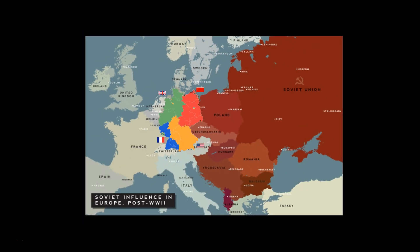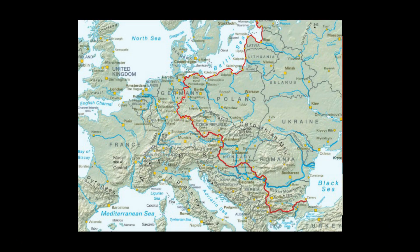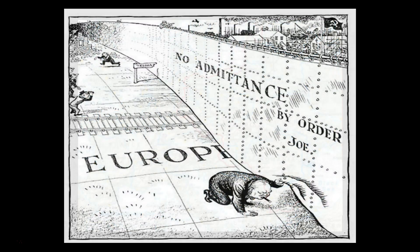By 1947, the outlines of a divided Europe had appeared, with a Soviet-dominated zone and a US-led zone separated by military power — what Winston Churchill called the Iron Curtain. The conflict between the United States and the Soviet Union was intensified by the invention and rapid proliferation of the atomic bomb, which ushered in a new age in which military conflict could potentially lead to nuclear Armageddon.